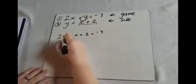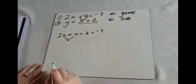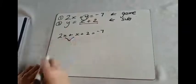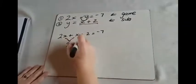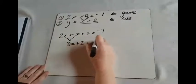So 2x plus x, that's called collecting like terms. So if you've got 2x plus x, you've got 3x plus 2 equals negative 7.